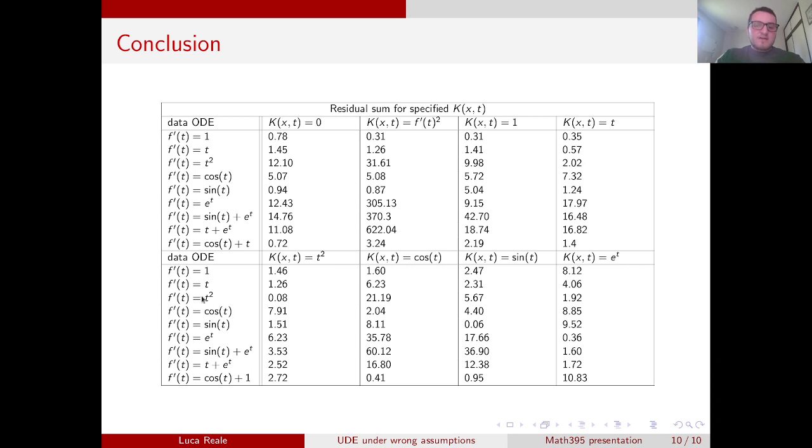An example here is if we look at the data generated by t squared, and if we use e to the power of t as our specification, we actually get a very small residual here, which is much smaller than if we use no specification. So this specification produces a better model than no specification, which I thought was quite interesting.